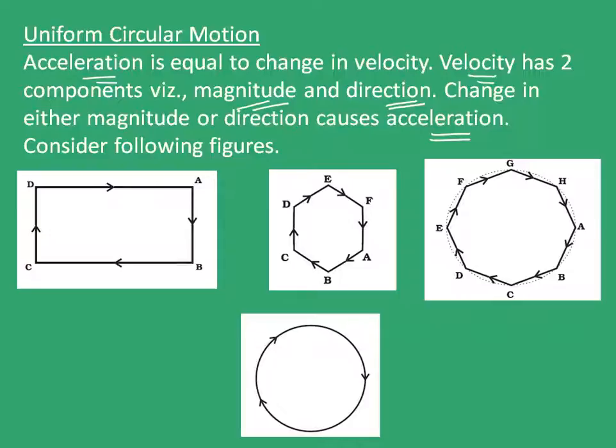Consider the following figures. The first figure shows a rectangular track ABCD. An athlete starts from point A and goes around the track back to point A. From A to B there is no change in direction. Assuming constant speed throughout, at point B there is a sudden change in direction, so the athlete has an acceleration there. Similarly, at points C and D the direction changes suddenly, giving accelerations. He changes direction four times to complete the full track.